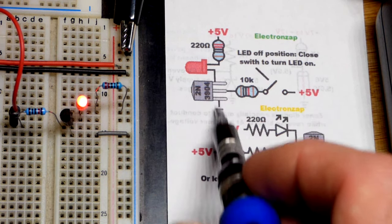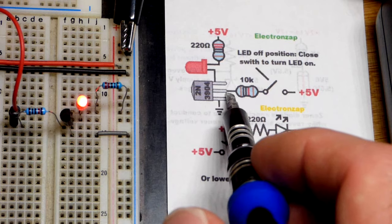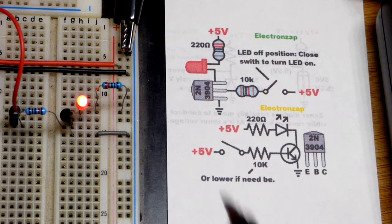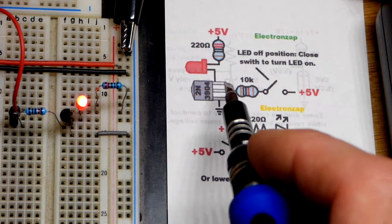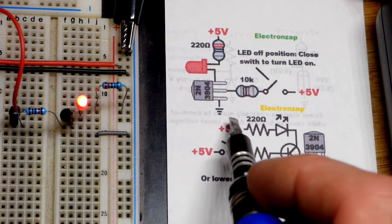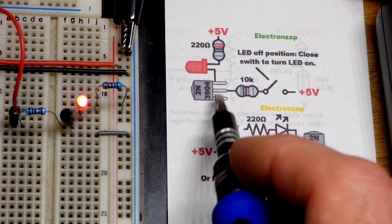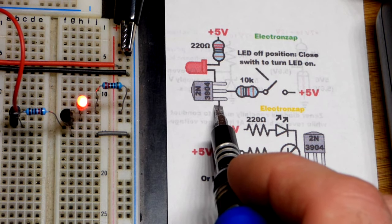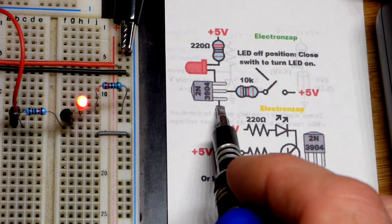It either lets the load go to ground or it cuts it off the way that we have it wired up. You can also use transistors to limit how much current goes through them using at least one other component. But in this case we either want it on completely or off completely.